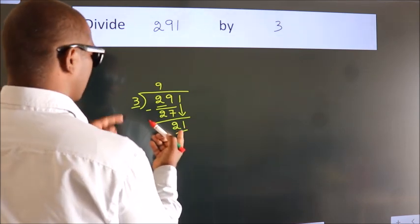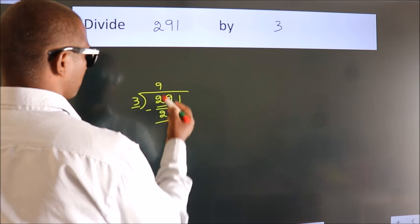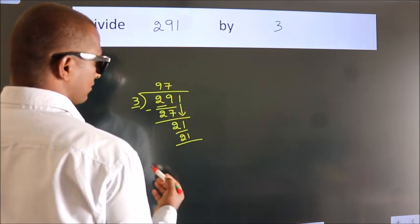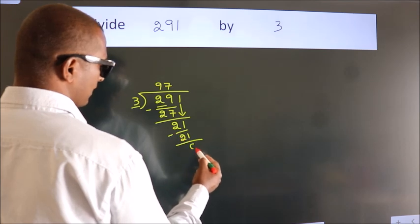When do we get 21 in 3 table? 3 7s 21. Now we subtract. We get 0.